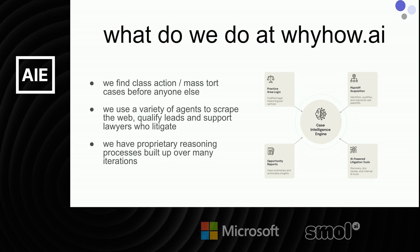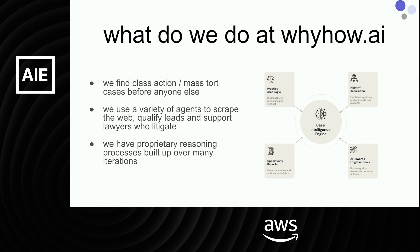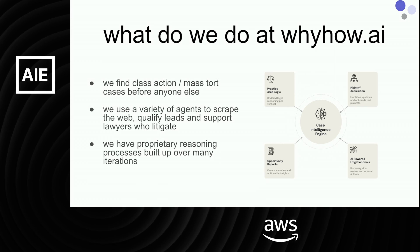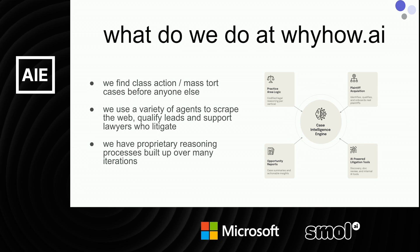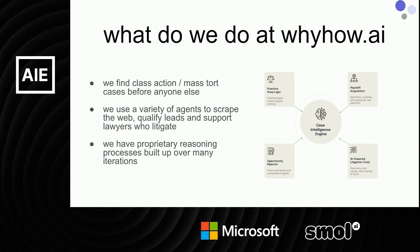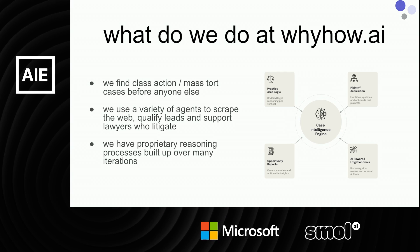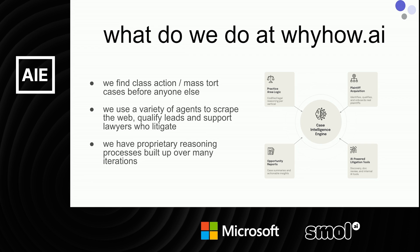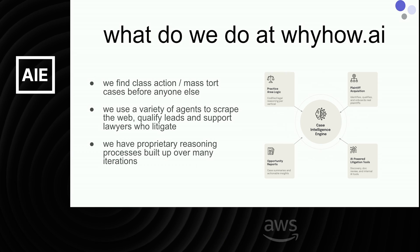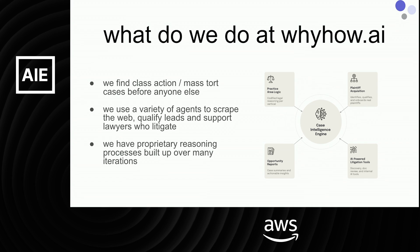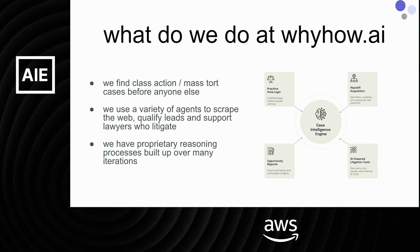This is broadly what we do. We work in law. We find class action mass tort cases before other people do. We have agents, we have graphs, we store that information, we scrape the web, we qualify that with a proprietary process, and we deal with lawyers every day. The cases I'm referring to would be like many people used a pharmaceutical product, that product caused them harm, science proved that harm, and we can collectively sue the pharmaceutical company. We support the law firms that do that.